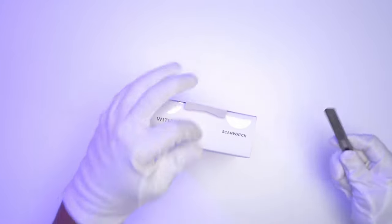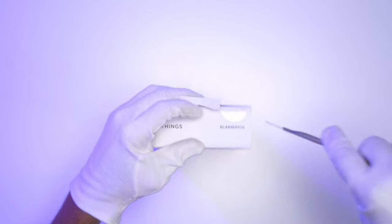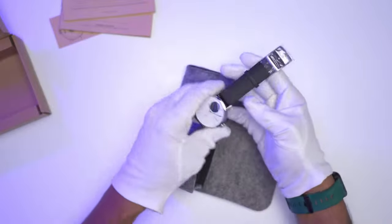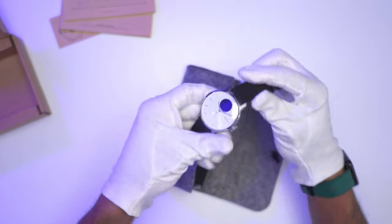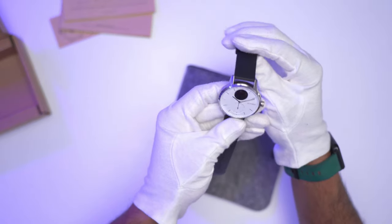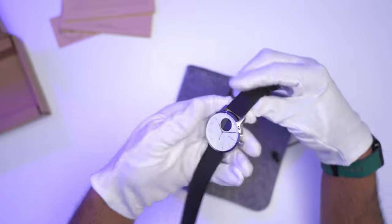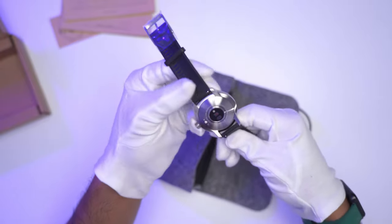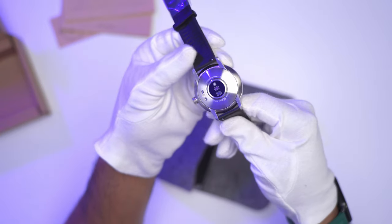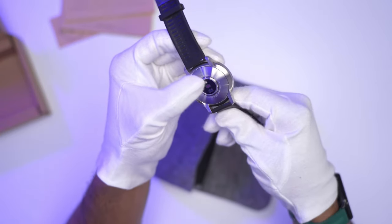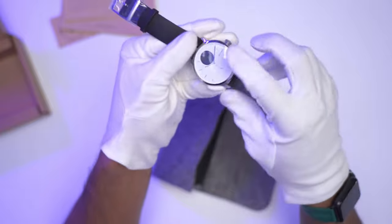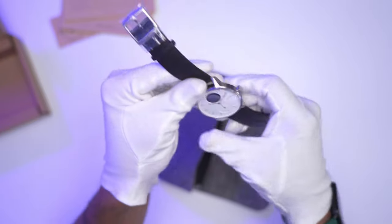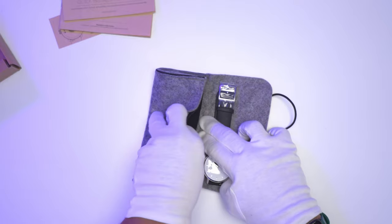Alright, so taking a look at what comes in the box. Here's the watch—it looks really nice and has a decent amount of weight to it. I'll weigh it later so you can see. It has the sensors at the back there, and it's a nice kind of domed sapphire glass.